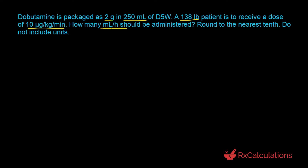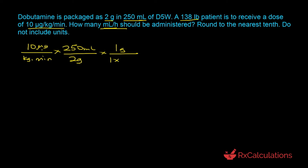Since we want to determine the flow rate in milliliters per hour, we start with the normalized mass rate: 10 micrograms per kilogram per minute. We multiply this by the volume of D5W, which is 250 milliliters — and that 250 milliliters contains 2 grams. We then convert grams to micrograms using the conversion factor that 1 gram equals 1×10⁶ micrograms, so the grams and micrograms cancel out.